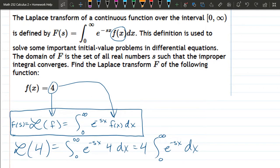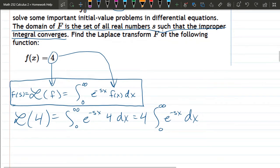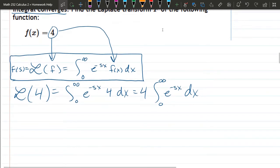Now there is some detail in here. The domain of f is a set of all real numbers s such that the improper integral converges. So this needs to converge. We'll worry about that once we take the limit after we do our antiderivative.